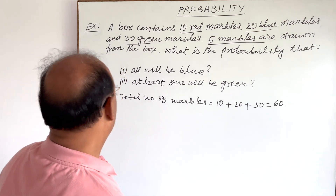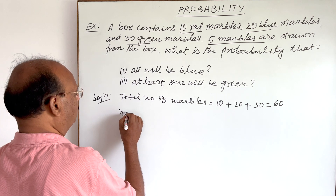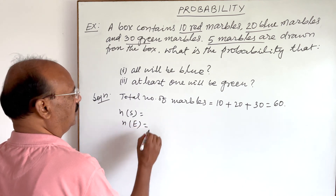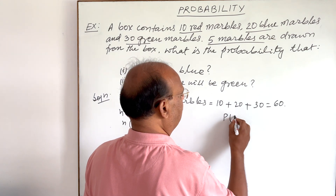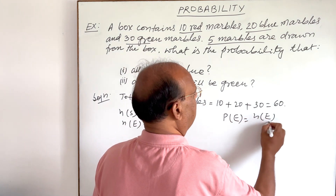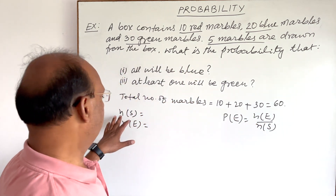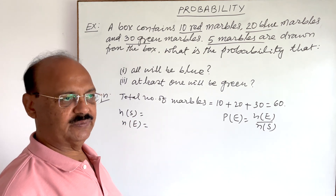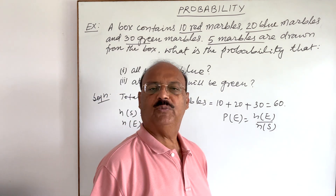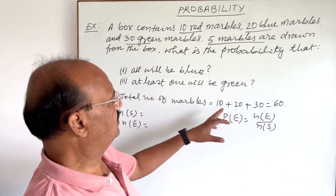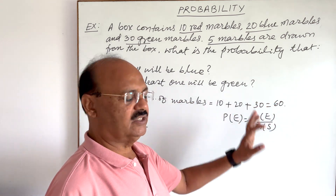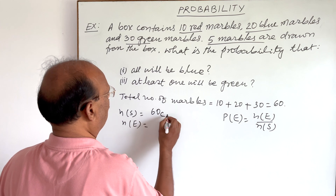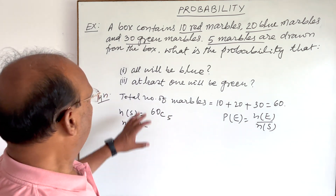We need to find NS and NE so we can use the formula: probability of event E equals NE divided by NS. NS is the number of elements in the sample space — that is, all possible outcomes. Since the total marbles is 60 and we select any five, NS will be 60C5.